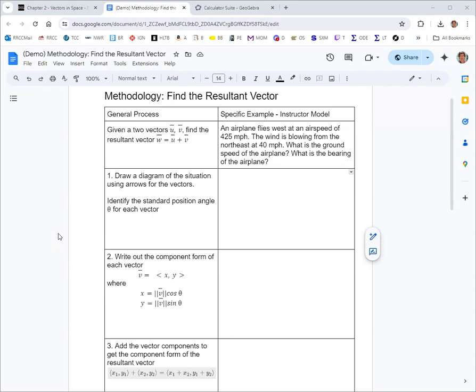All right, in this video we're going to see how to find the resultant vector. The problem we're looking at in the instructor model has an airplane flying west at 425 miles per hour, wind is blowing from the northeast at 40 miles per hour.